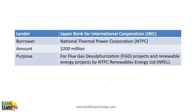Japan Bank for International Cooperation (JBIC) — the borrower is National Thermal Power Corporation (NTPC). Japan Bank for International Cooperation lent 200 million dollars to NTPC for FGD projects and renewable energy projects by NTPC Renewable Energy Limited.